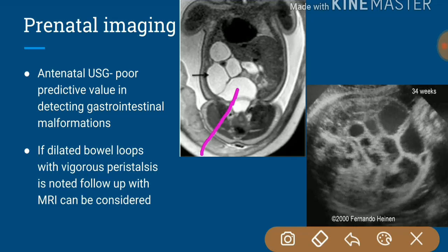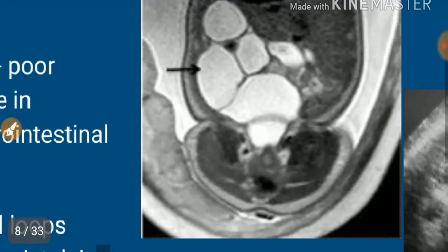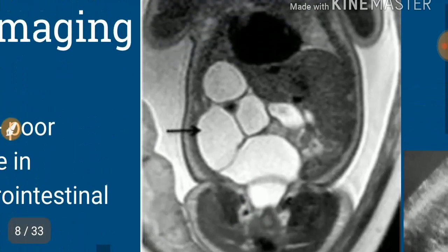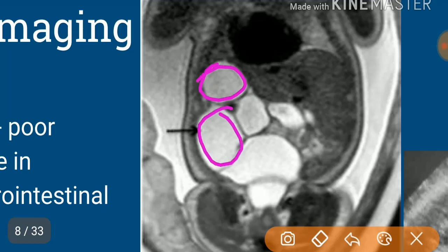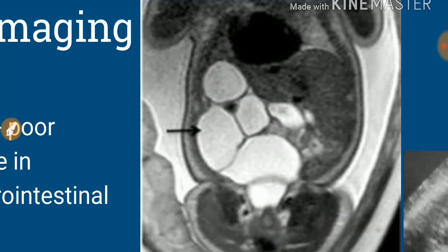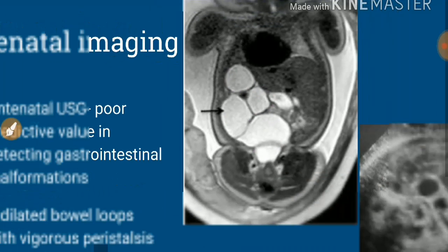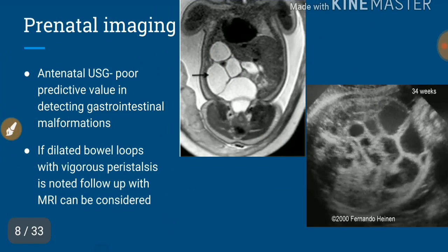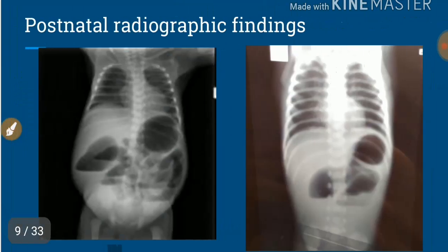On MRI, in this case of ileal atresia, we can see widely dilated bowel loops. This is the in utero picture. Suppose a baby with this prenatal imaging — with or without it — is born; let us look at what the X-ray picture will be.